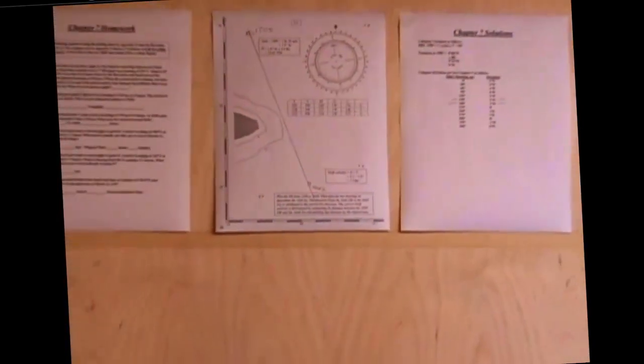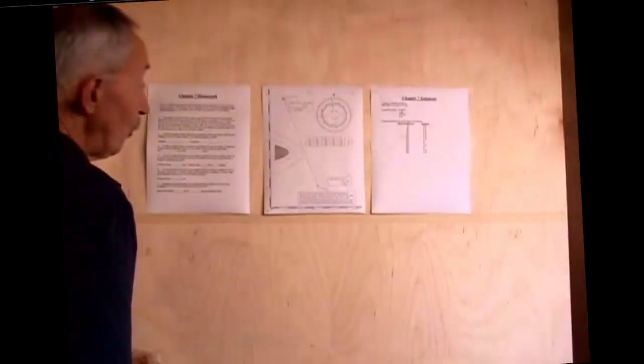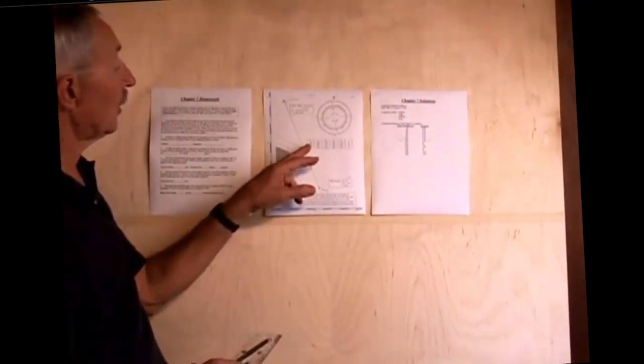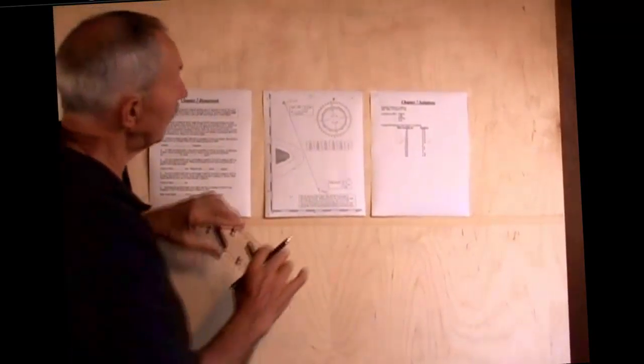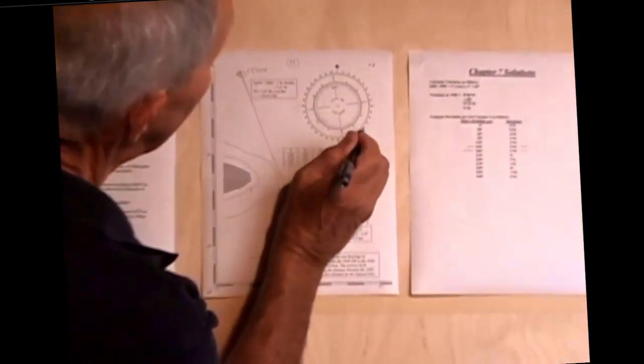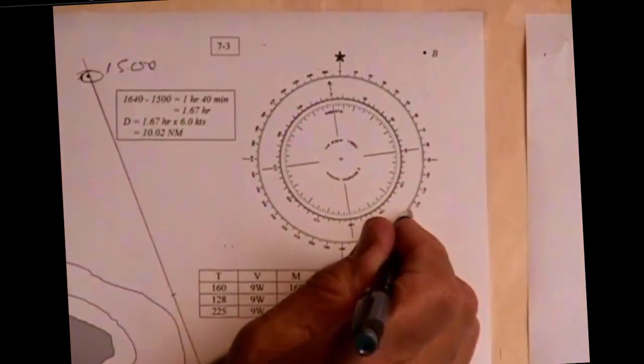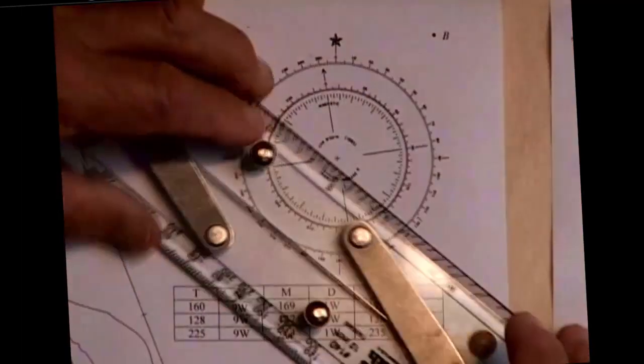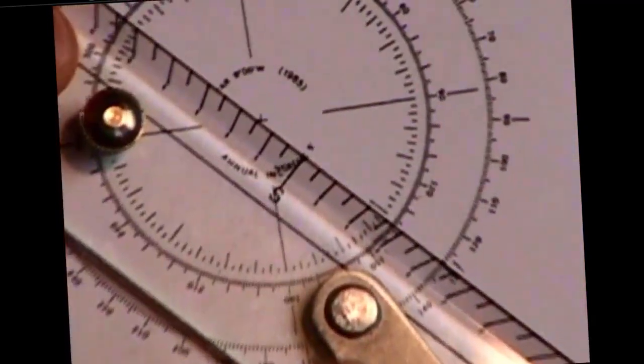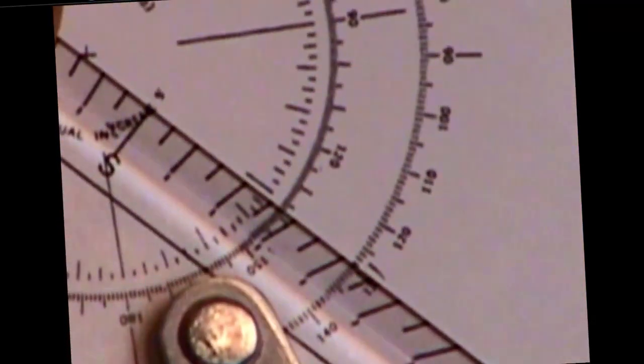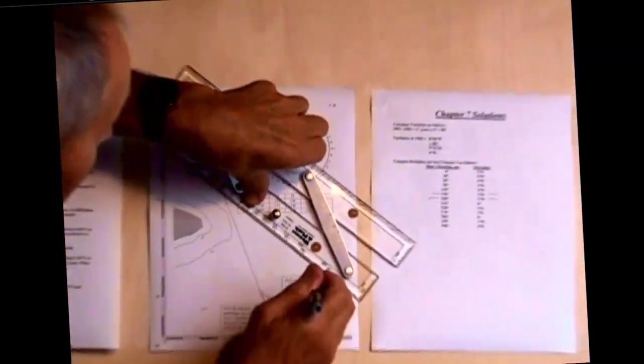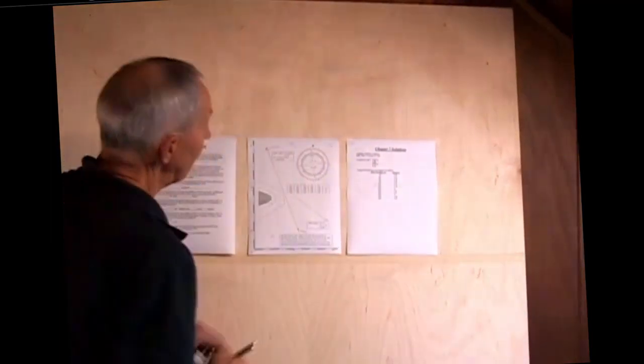The problem says that at 1640 I took a bearing on F and took a bearing on E. The bearing on F was 128. Let's come over here and find 128. Here is 130, 120. Here is 128. I will put my parallel rules in, run that down until I'm at F, and extend that line.